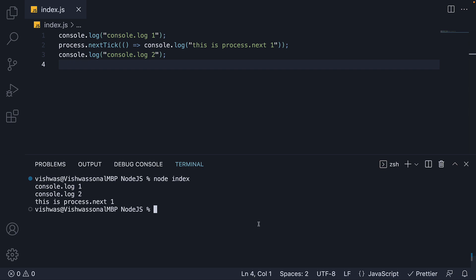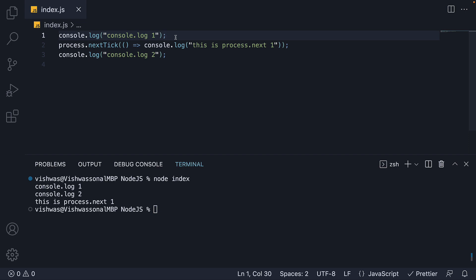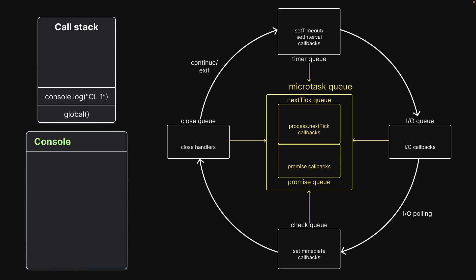Let me help you visualize this execution. On the left we have the call stack and the console to see the output; on the right we have the event loop. First, console.log is pushed onto the call stack, logs the corresponding message in the console, and is popped off the stack.